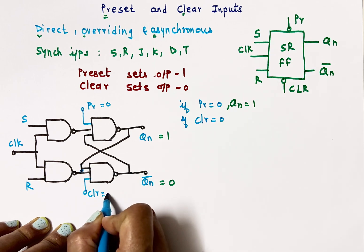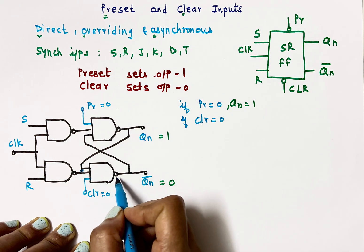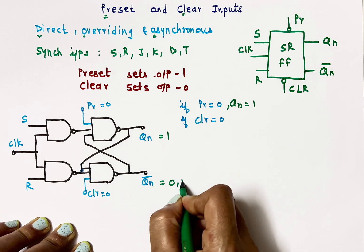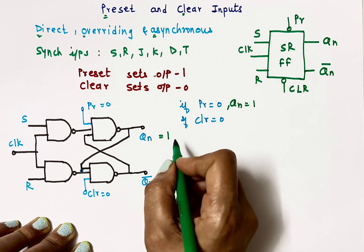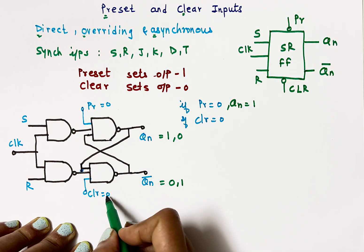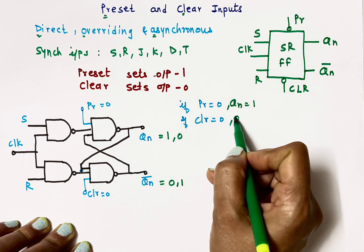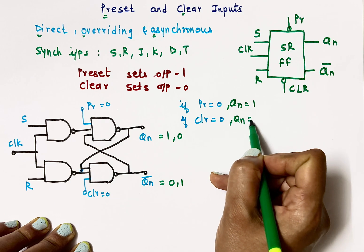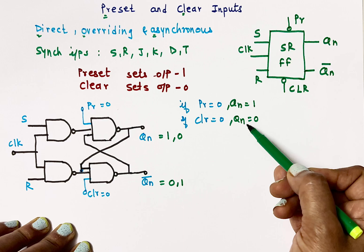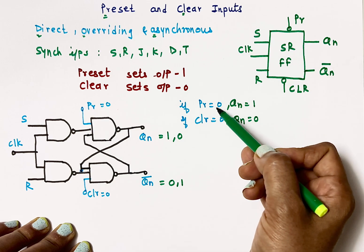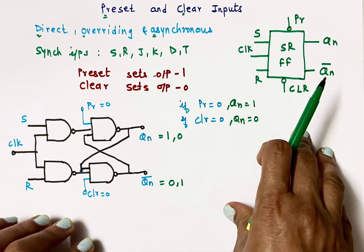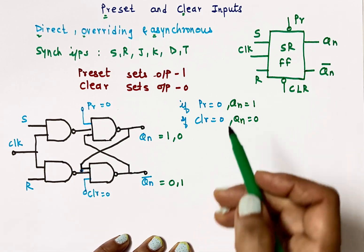If clear equals 0, the output of that NAND gate will become 1, which means Qn-bar is 1, so Qn is 0. Therefore, when clear receives a 0, it makes the output Qn equal to 0. So: when clear input receives 0, it makes output 0; when preset input receives 0, it makes output 1.